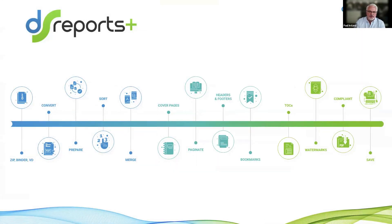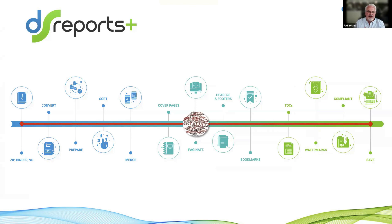With that, what DocShifter Reports does — the only manual step is at the beginning, which is actually creating the collection of documents, creating that binder. It could also be a zip file containing multiple documents in Vault — that can be the starting point of a report as well. So you literally have that one point of creating the binder, and then leveraging metadata available in Vault, we convert each individual document to PDF if it's not already, and prepare those PDFs to ensure they're compliant with the correct bookmarks in place.